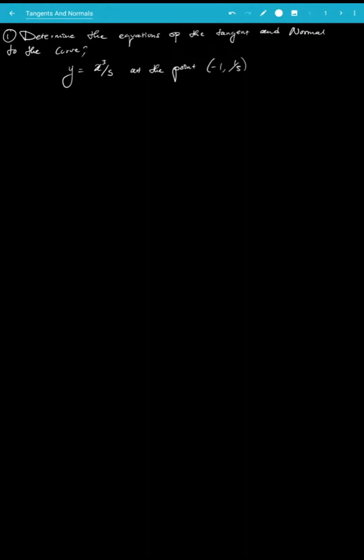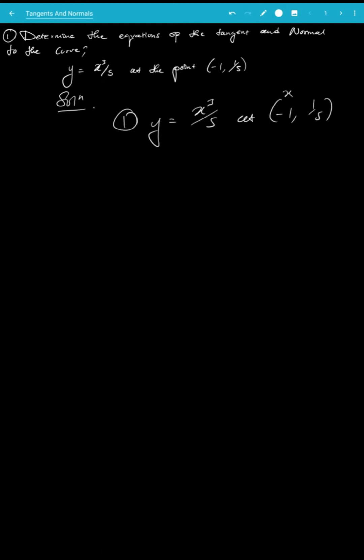Hello everyone, welcome back. In today's video we'll be looking at tangents and normals. The question says: determine the equation of the tangent and the normal to the curve y = x³/5 at the point (-1, 1/5), where -1 is the x-coordinate and 1/5 is the y-coordinate.